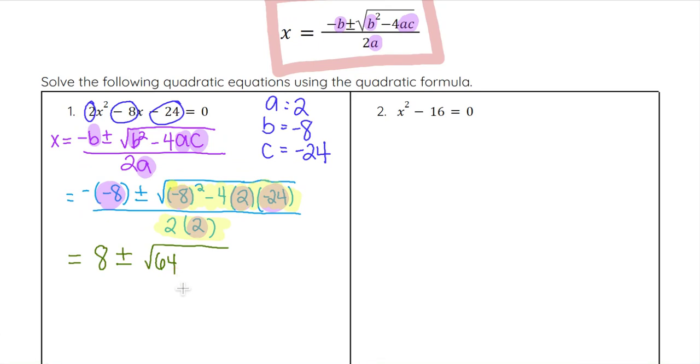Then we have negative 4 times 2 times negative 24. Negative 4 times 2 is negative 8, so we're doing negative 8 times negative 24. A negative times a negative becomes positive.